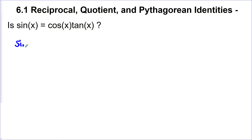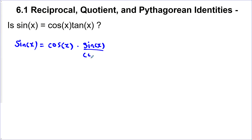Sine x is pretty basic, so I'm not going to do anything with that. Same with cos x, but if you remember, tan is opposite over adjacent, or it's also sine x over cos x. Then we can see that the cos and the cos cancel on the right side, and we're left with sine x equals sine x.